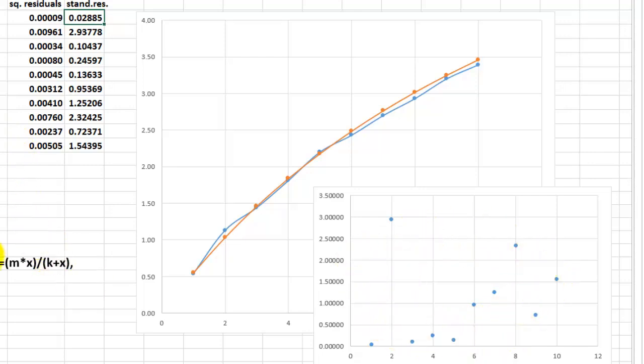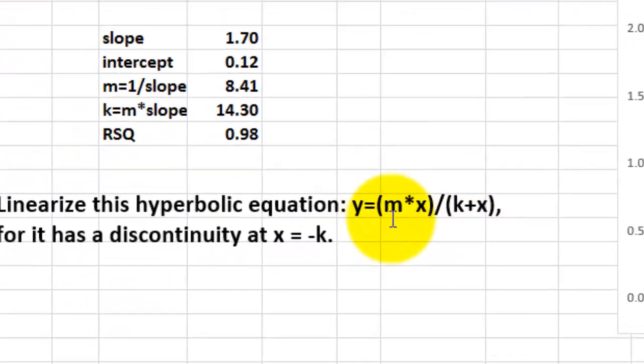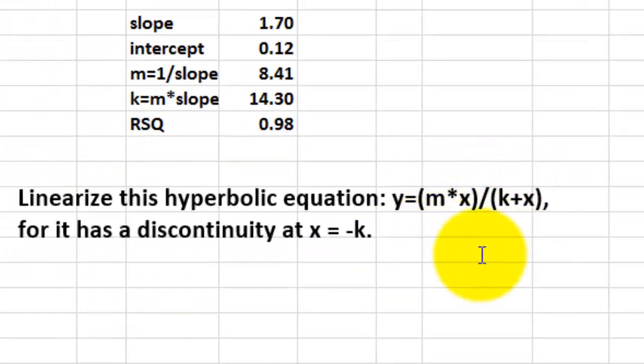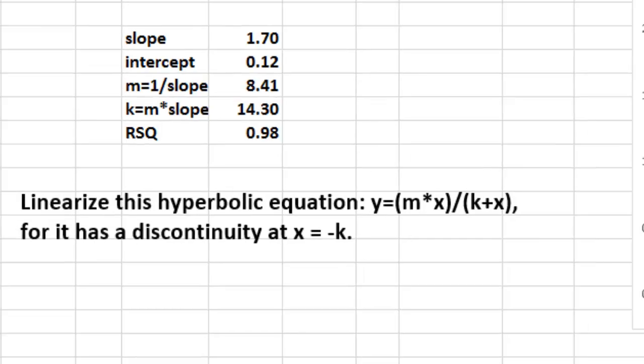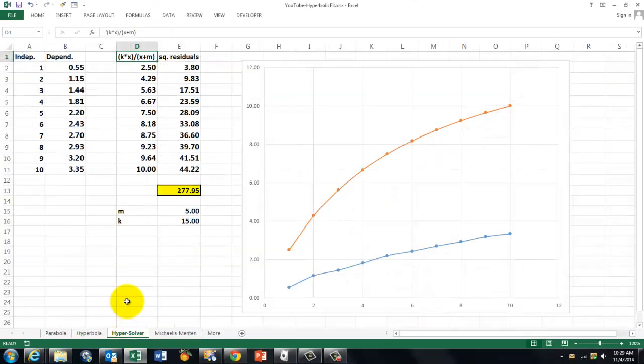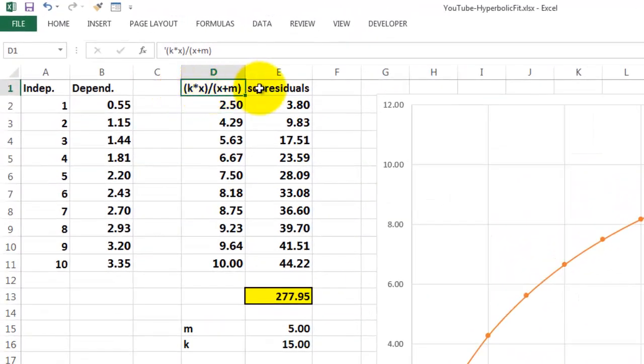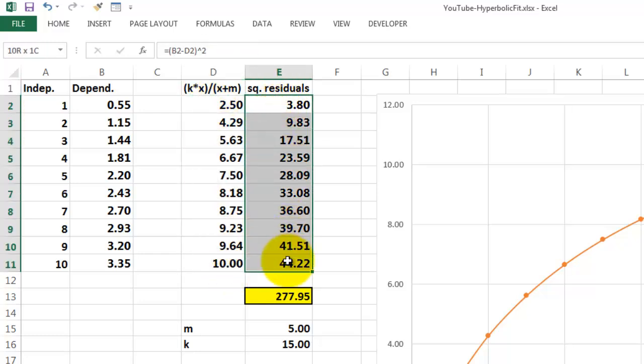If you don't feel comfortable manipulating that formula and linearizing it, there is a much easier solution if you still want a hyperbolic curve. So in this case, I used this formula and we calculate that and we calculate the squared residuals. And then finally we sum all those squared residuals. That sum should be as small as possible.